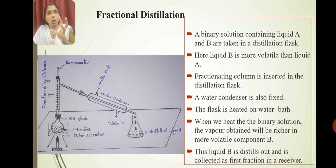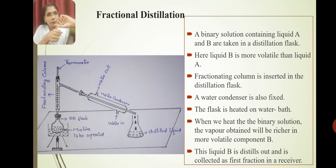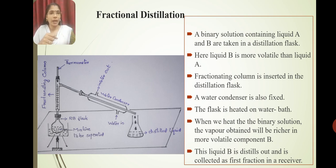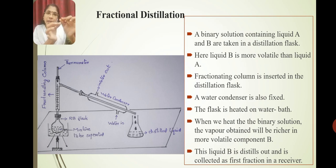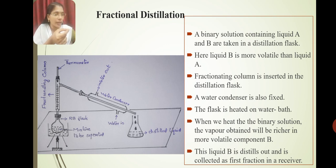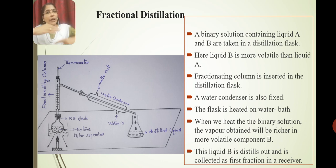The setup uses a round bottom flask connected to a fractionating column. Then a thermometer and a water condenser are also connected. A conical flask is used as a receiver. The water condenser has two connections — one end for water in and one for water out — allowing continuous cold water flow through the condenser.